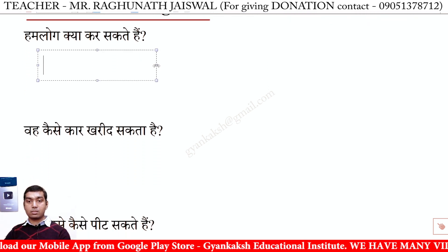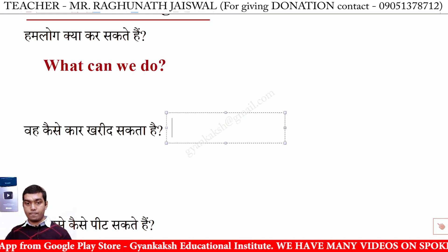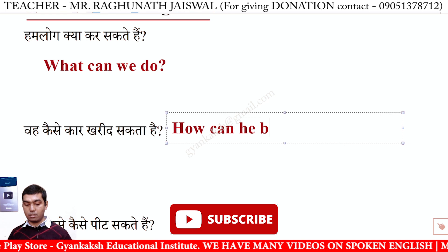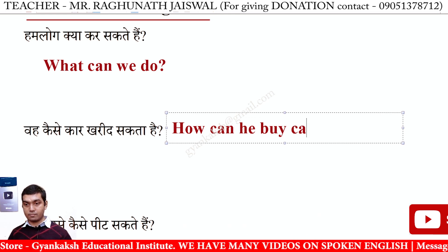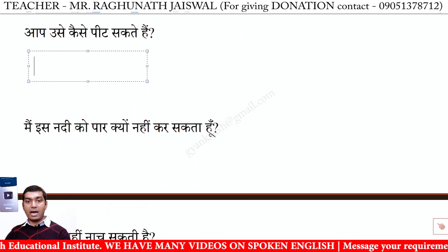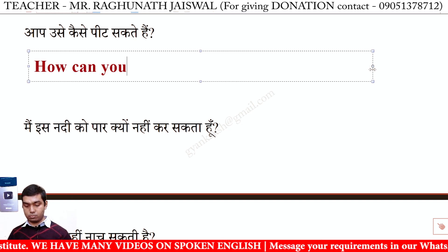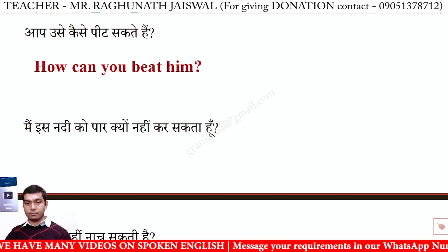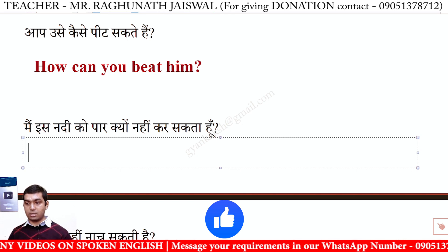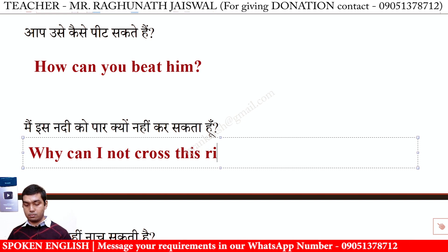हम लोग क्या कर सकते हैं? — What can we do? वह कैसे कार खरीद सकता है? — How can he buy a car? आप उसे कैसे पीट सकते हैं? — How can you beat him? मैं इस नदी को पार क्यूं नहीं कर सकता हूँ? — Why can I not cross this river?